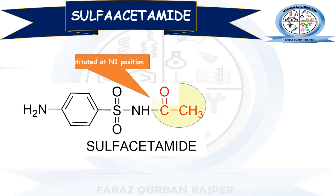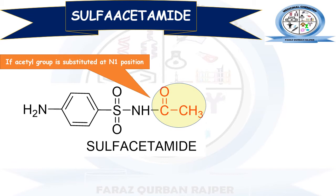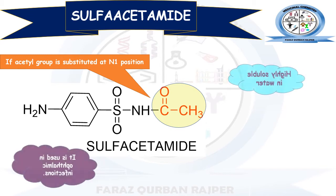Sulphacetamide is the derivative of sulphonamide that is formed by the substitution of the N1 site with the acetyl group. You may observe that at the N1 site, this acetyl functional group is present in the sulphacetamide chemical structure.